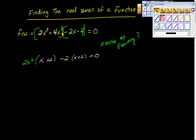This whole thing is going to equal 0. I'm going to have my 2x squared minus 2. That's one of mine. And I'm going to multiply that times x plus 2.